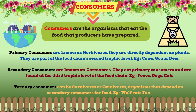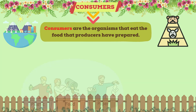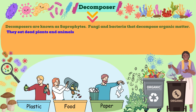Secondary consumers are known as carnivores. They eat primary consumers and are found at the third trophic level of the food chain, e.g. foxes, dogs and cats. Tertiary consumers can be carnivores or omnivores — organisms that depend on secondary consumers for food, e.g. a wolf eats a fox.